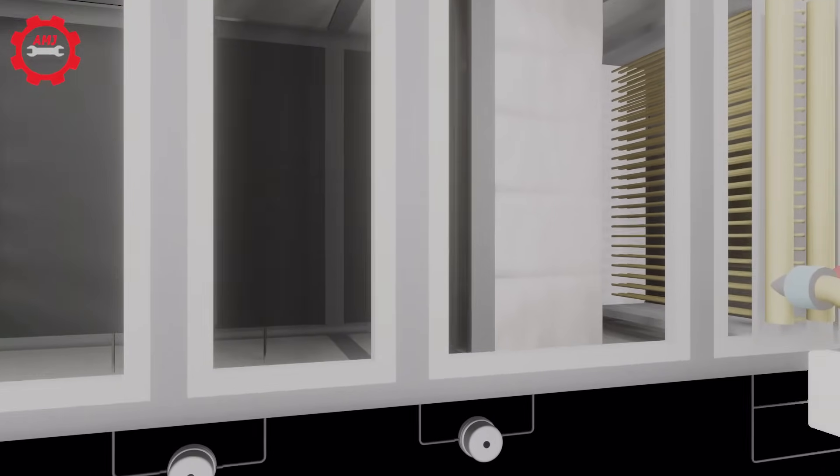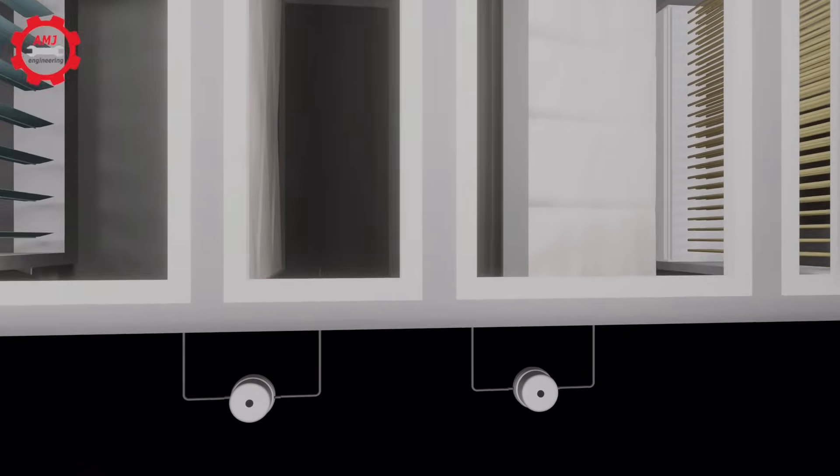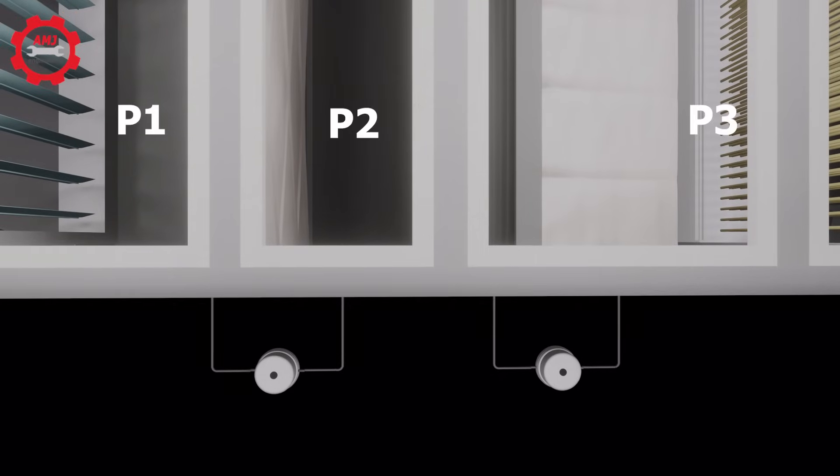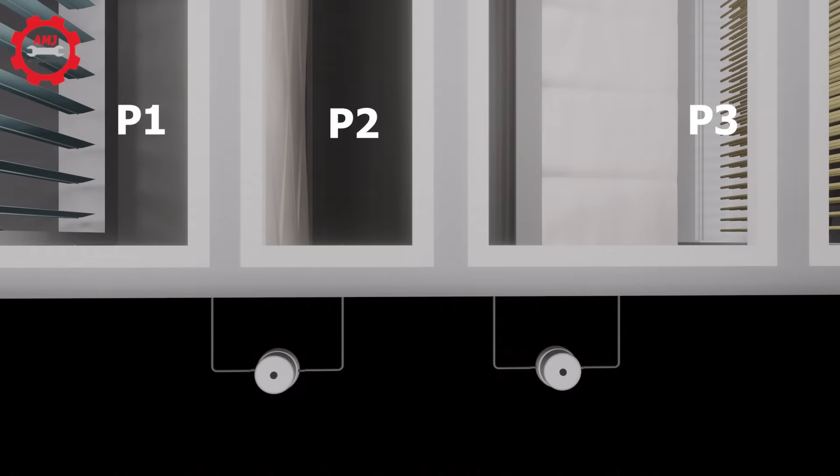Some air handlers include differential pressure monitoring devices to measure the pressure drop across the filters. The dirtier a filter gets, the higher the pressure drop, which results in reduced airflow.